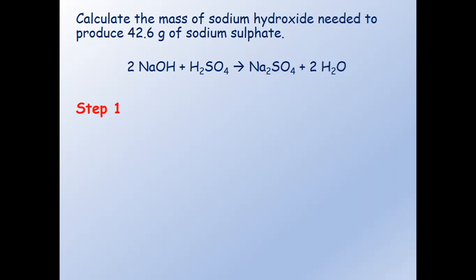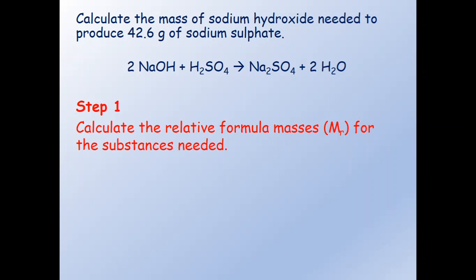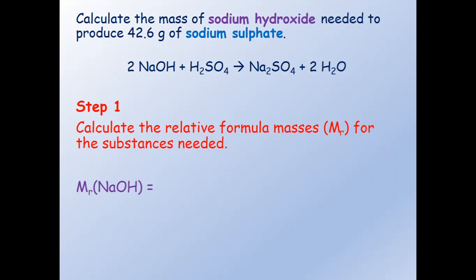So the first step is to calculate the relative formula masses, Mr, for the substances needed. Which substances you actually need you find in the question. Even though there are four substances in the balanced equation, the question only talks about sodium hydroxide and sodium sulfate. For sodium hydroxide, we add the atomic masses: 23 for sodium, plus 16 for oxygen, plus 1 for hydrogen, giving a relative formula mass of 40.